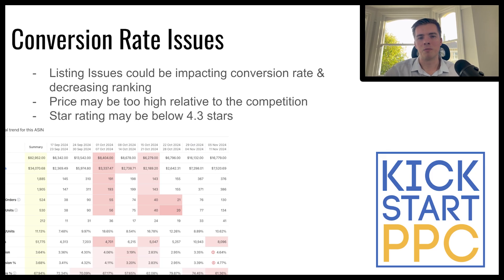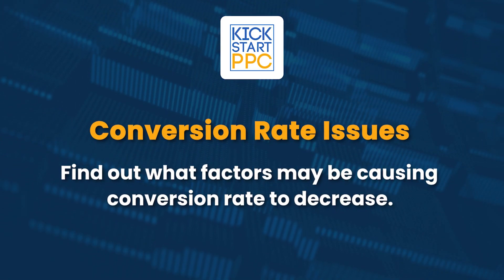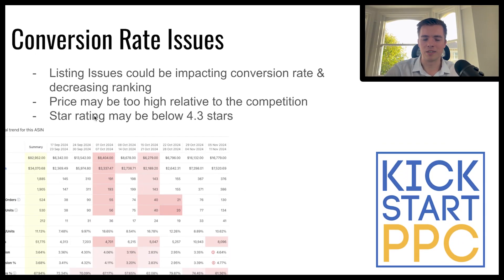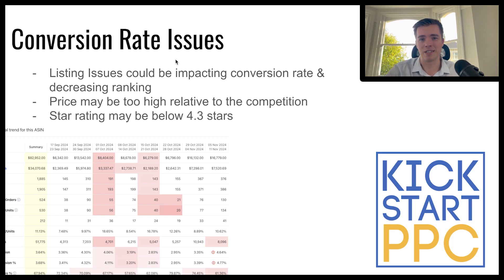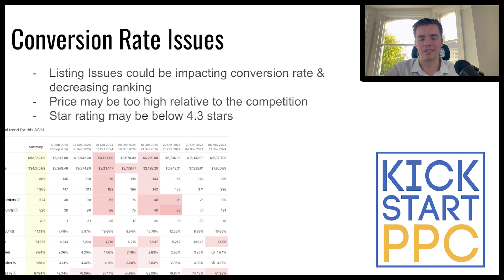The third and arguably one of the most important issues is conversion rate. This can be solved in most cases pretty easily. The star rating is a bit harder — you need good feedback for that and should look at your product for any defects people may be leaving feedback on. But when it comes to pricing and your listing, that's all on you to fix. Go in and look at your listing — is there anything going wrong, anything you can improve? Whether it be the price, the title, bullet points, images, or A+ content, you can sort that out relatively easily.